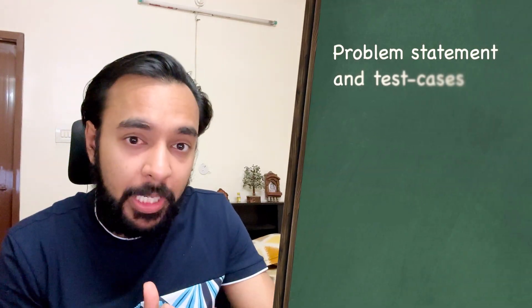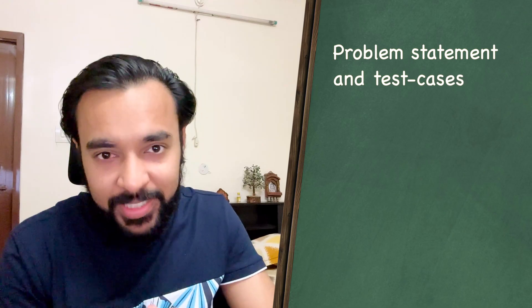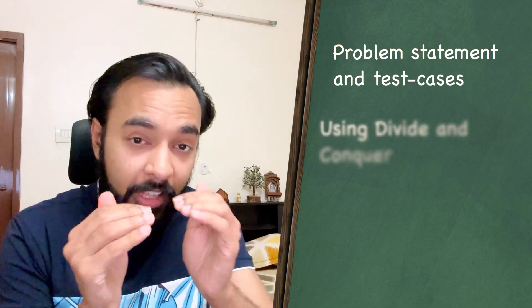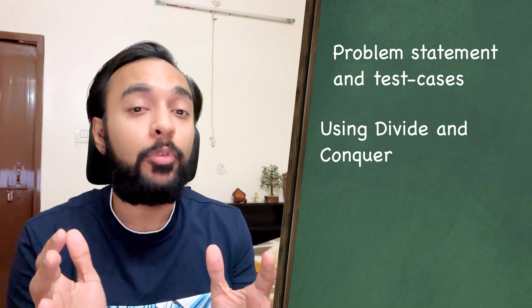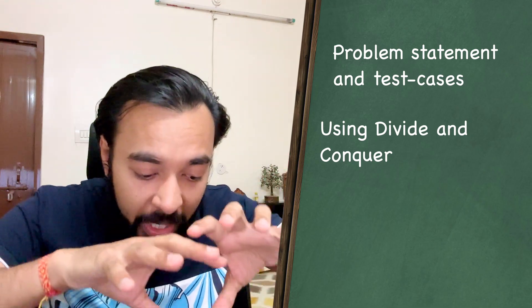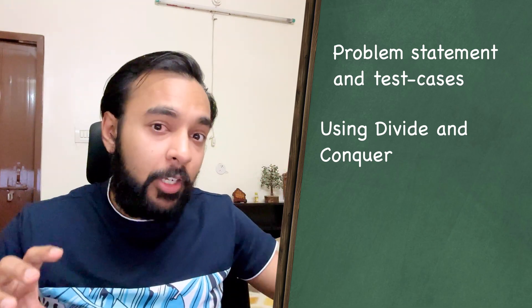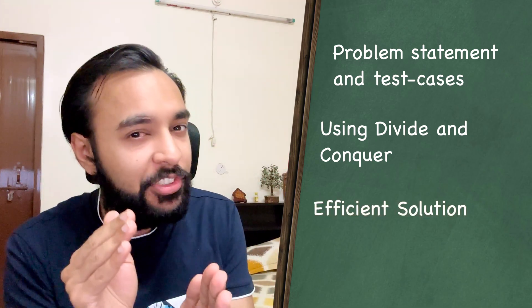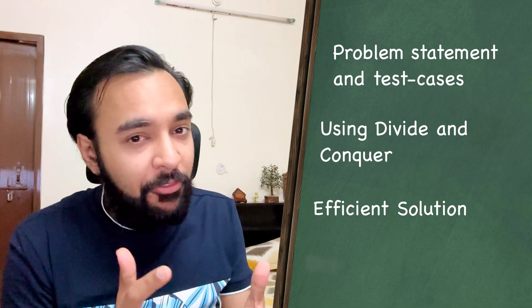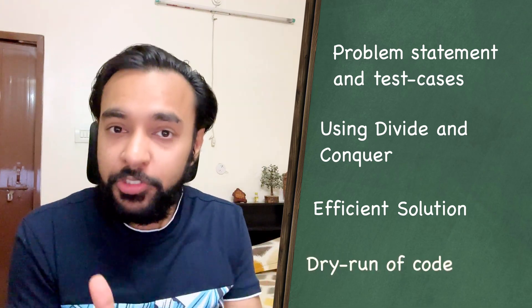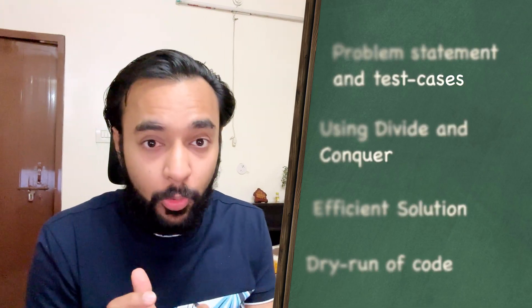Hello friends, welcome back to my channel. First I will explain the problem statement and we'll look at a sample test case. Going forward we are going to see how you can use the divide and conquer approach to break down this problem. You will find the solution very similar to the quicksort method. After that we will also do a dry run of the code so you can visualize how all of this is working in action.